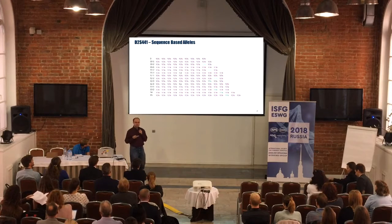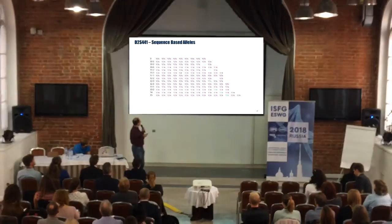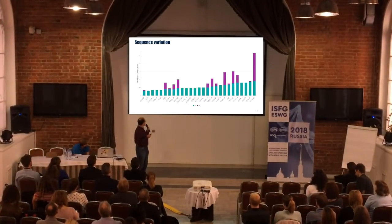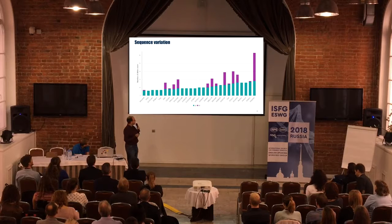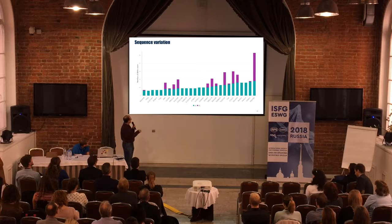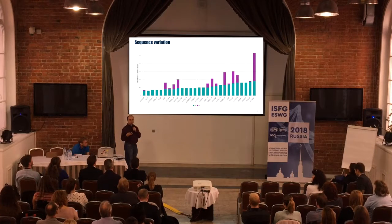Which is not surprising — it's probably been discussed a little bit over the last couple of days. And if you look at different markers, we can see that there are some markers like D12, D2, and D21, where we're getting a lot of sequence variation.